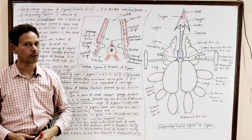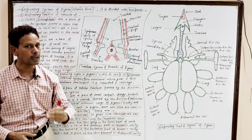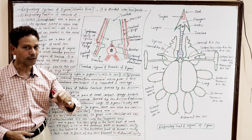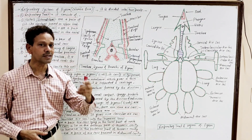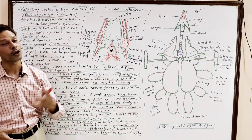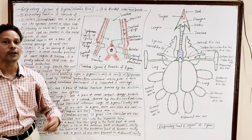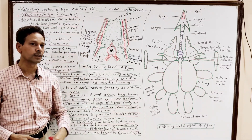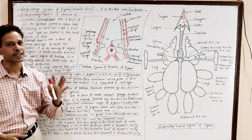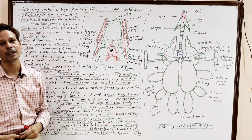Dear students, in today's lecture we will discuss the respiratory system of Pigeon Columba livia. This entire respiratory system is divided into two parts: the first part is the respiratory tract, and the second part is the respiratory organs.